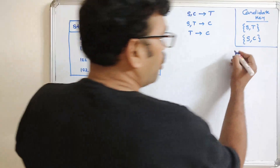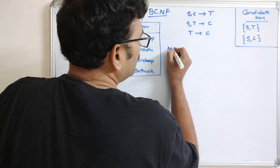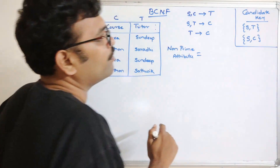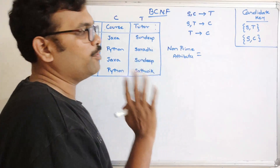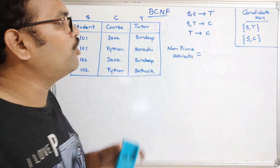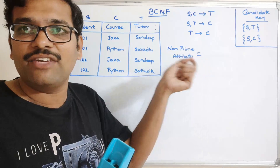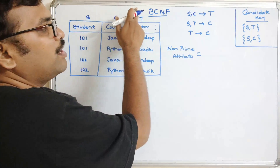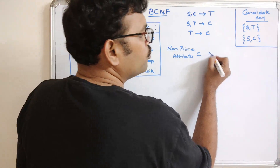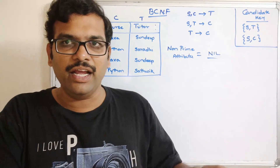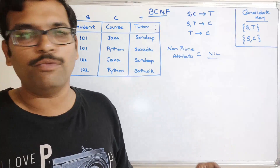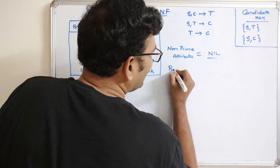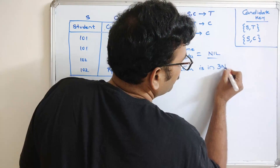The non-prime attributes are attributes not available in any candidate key. Our candidate keys are S,T and S,C, and all three attributes S, T, and C appear in these candidate keys — so there are no non-prime attributes. Since 3NF requires no transitive dependency for non-prime attributes, and there are none, the relation is in 3NF.